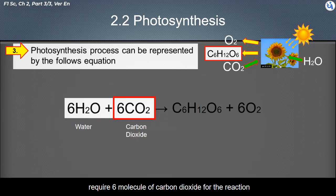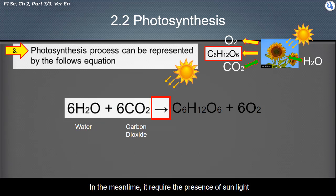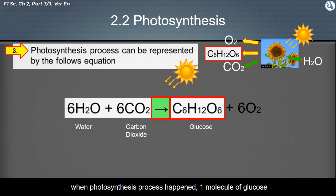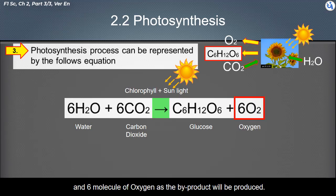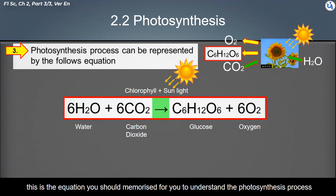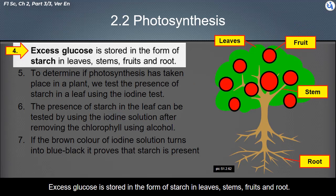In the photosynthesis equation, six molecules of water require six molecules of carbon dioxide for the reaction, and the process requires the presence of sunlight and chlorophyll. As a result, one molecule of glucose and six molecules of oxygen as a byproduct are produced. This is the equation you should memorize. Excess glucose is stored in the form of starch in leaves, stems, fruits, and roots.